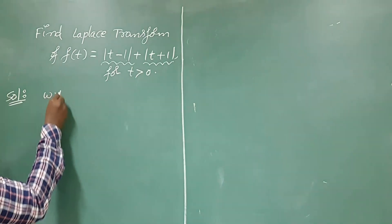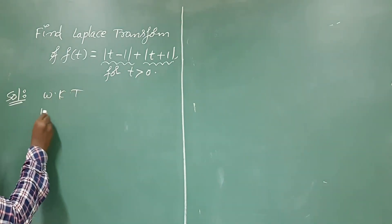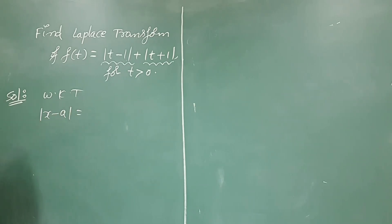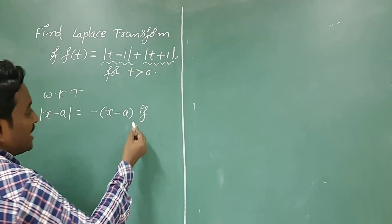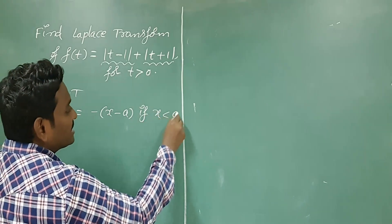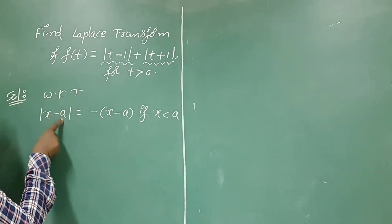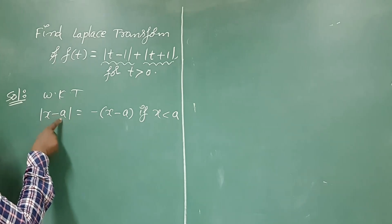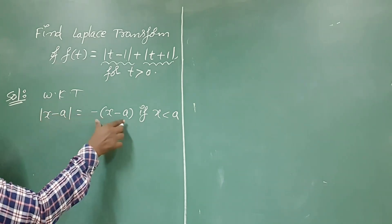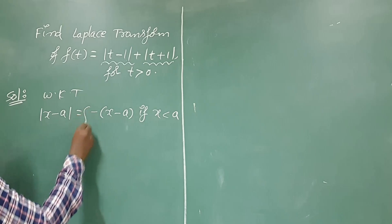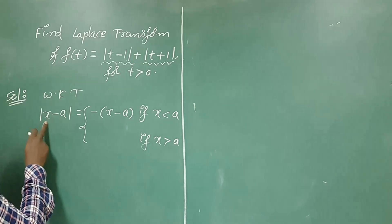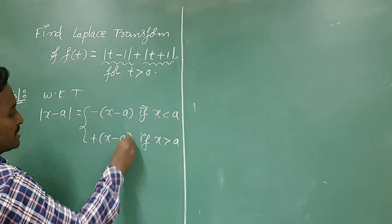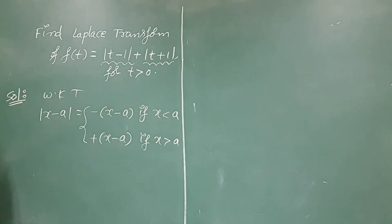For this, we already know that modulus of x minus a. According to the definition, modulus of x minus a equals minus of (x minus a) if x is less than a, and positive of (x minus a) if x is greater than a. This is the definition of modulus of x minus a.